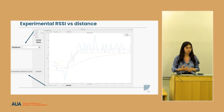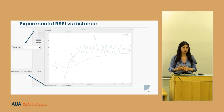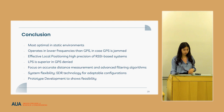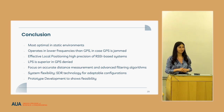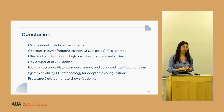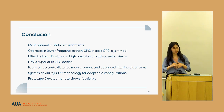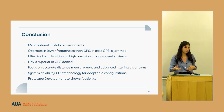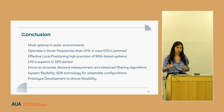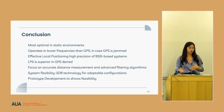A committee member confirmed that the same module was used for both nodes and the target. On the topic of dynamic environments: the presenter clarified it's not binary — if an object moves very slowly the system can still localize it. However, for fast-moving objects like drones, the system is not optimized at this stage.